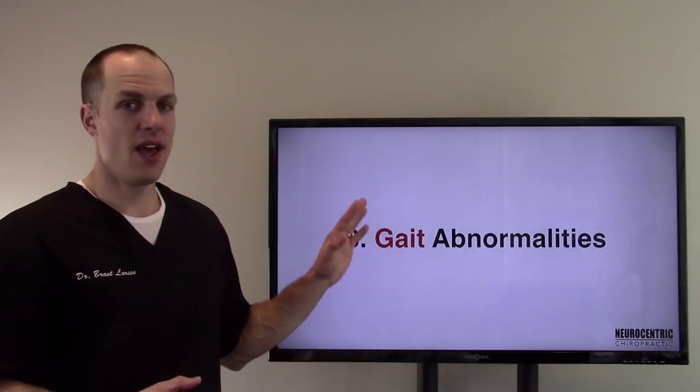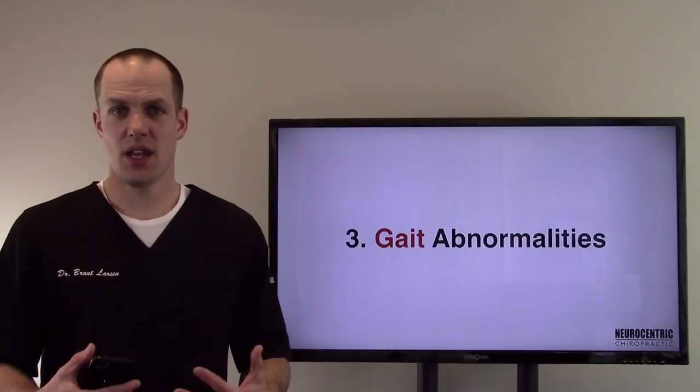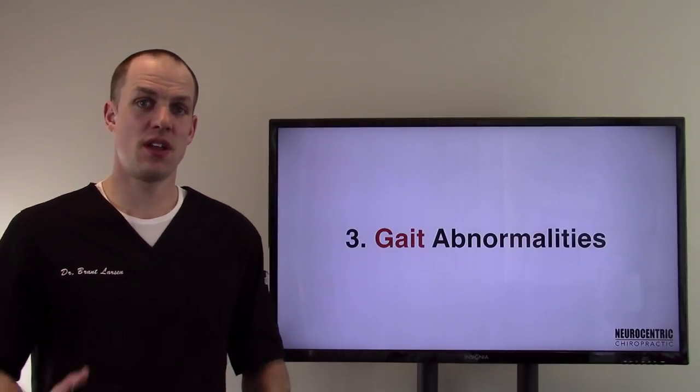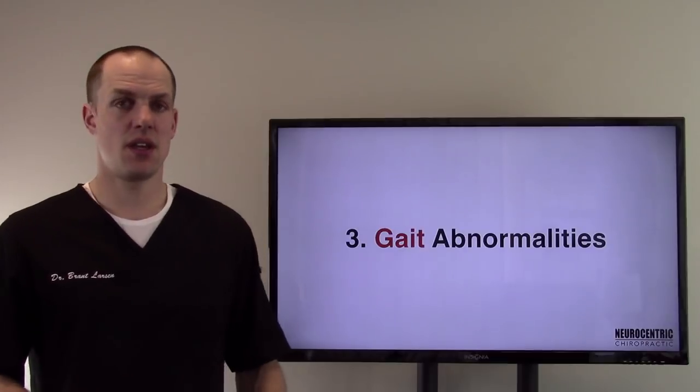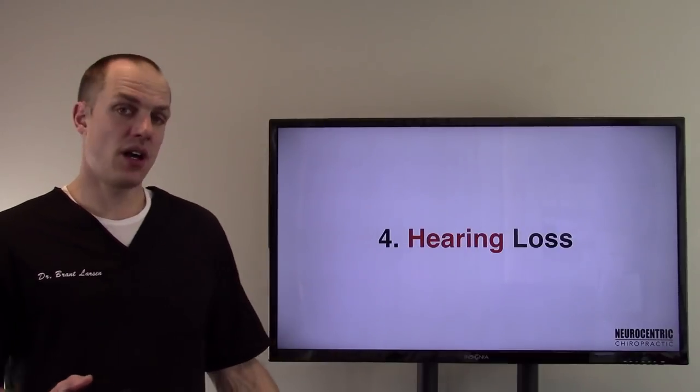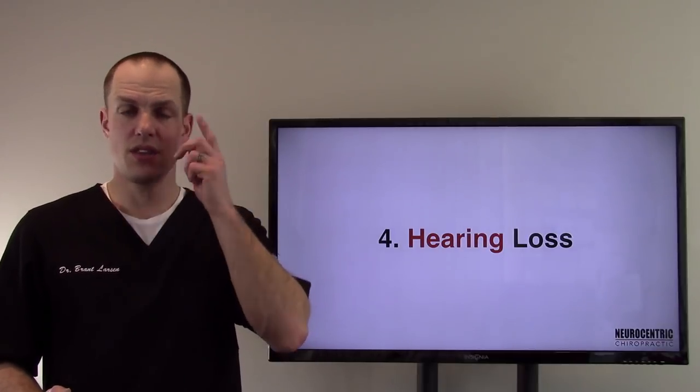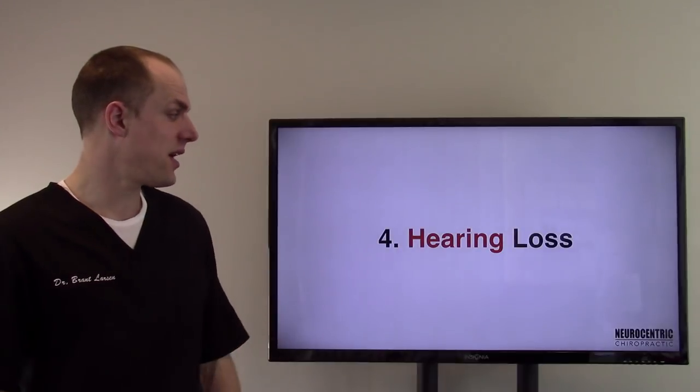Gait abnormalities. Gait is your walk, how you walk. It's a nervous system function, so it needs to be coordinated. If you have B12 deficiency, your gait could be abnormal. Number four, hearing loss. Hearing has to do with the nerve as well. It's cranial nerve eight that goes to the ears and your hearing could be affected.